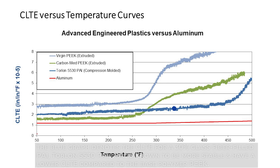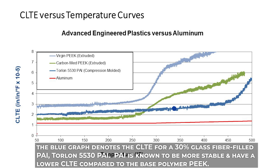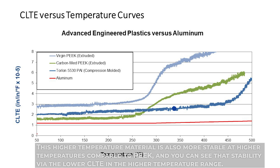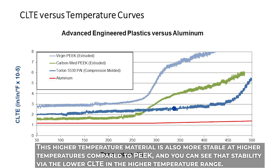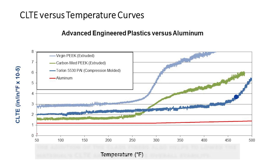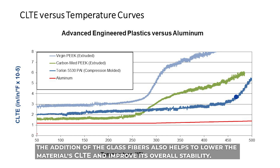Finally, the blue graph denotes the CLTE for a 30% glass fiber-filled polyamide imide, a material also known as Torlon 5530 PAI. The base polymer PAI is known to be more stable and have a lower CLTE compared to the base polymer PEEK. This higher temperature material is also more stable at higher temperatures compared to PEEK. And you can see that the stability via the lower CLTE is also magnified with the glass fibers, particularly in the higher temperature range. Of course, the addition of the glass fibers helps to lower the material CLTE and improve its overall stability.